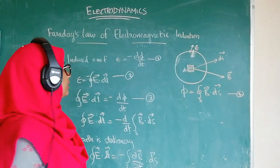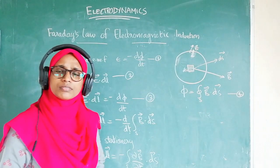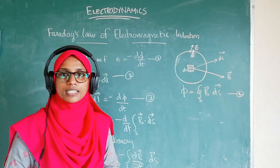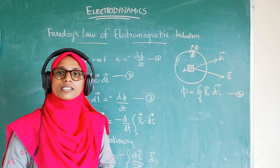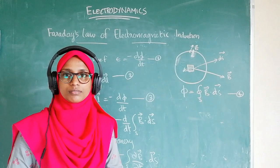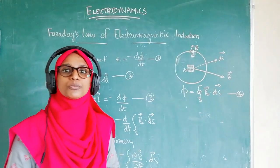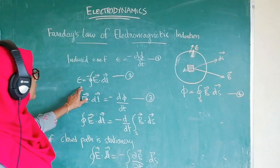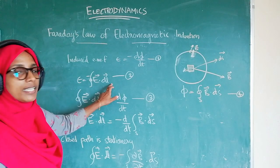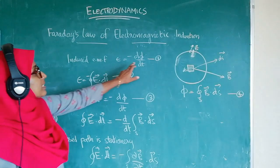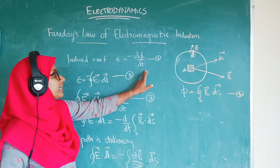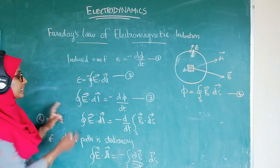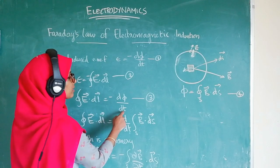EMF, or electromotive force, is the work done by the active electric field to move a unit positive charge once along a closed loop. EMF is also calculated as the negative closed line integral of E·dL. From these two equations — EMF equals minus dΦ/dt and EMF equals minus the closed line integral of E·dL — we get: the closed line integral of E·dL equals minus dΦ/dt.